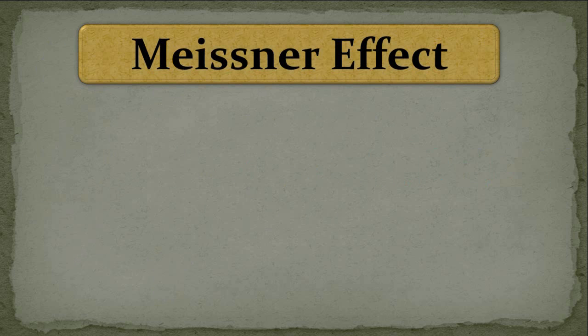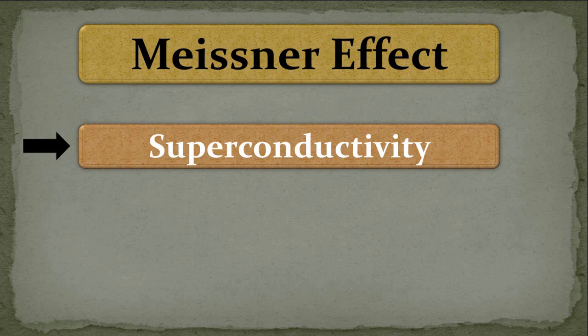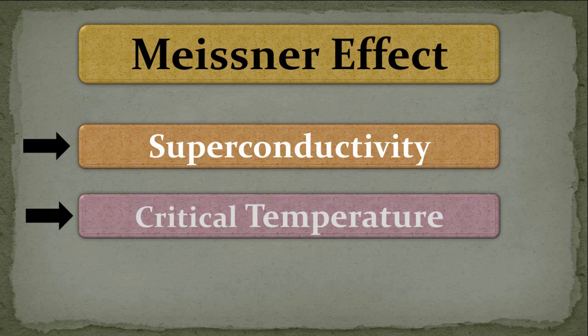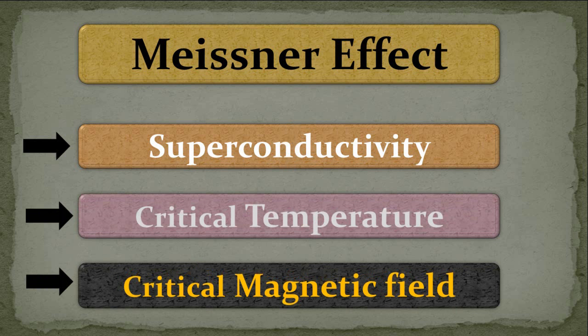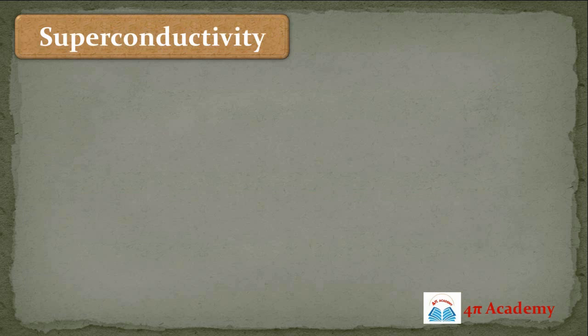So if you want to understand the Meissner effect, first you need to understand the basics of superconductivity. You have to understand what is superconductivity, what is the phenomenon of superconductivity, and also what is critical temperature, and the third important point, critical magnetic field. So first we will cover and understand what is superconductivity, critical temperature, and critical magnetic field, so that we can clearly understand the Meissner effect.